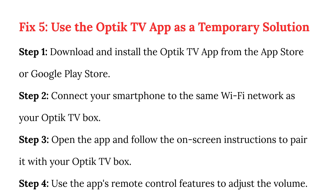Fix 5: use the Optic TV app as a temporary solution. Step 1: download and install the Optic TV app from the App Store or Google Play Store. Step 2: connect your smartphone to the same Wi-Fi network as your optic TV box. Step 3: open the app and follow the on-screen instructions to pair it with your optic TV box. Step 4: use the app's remote control features to adjust the volume.